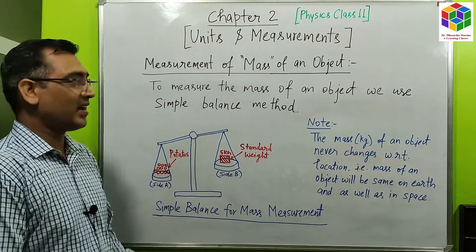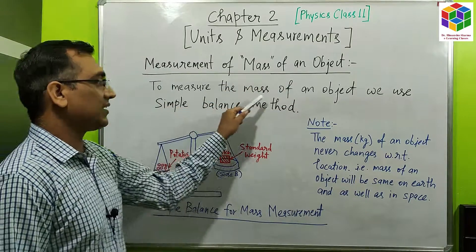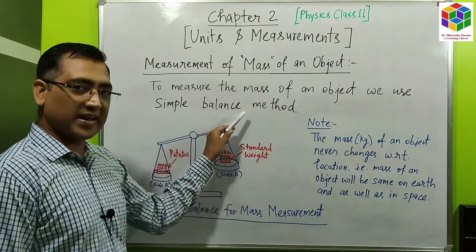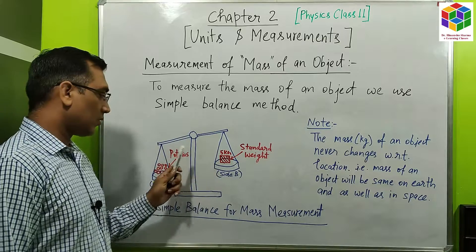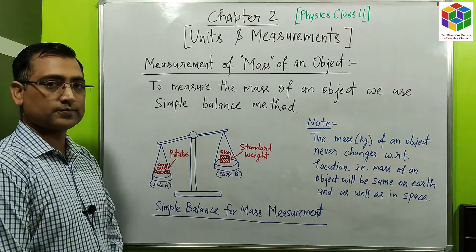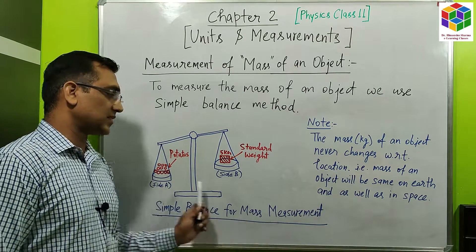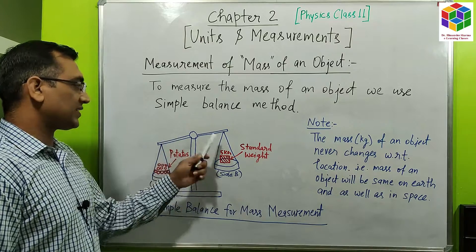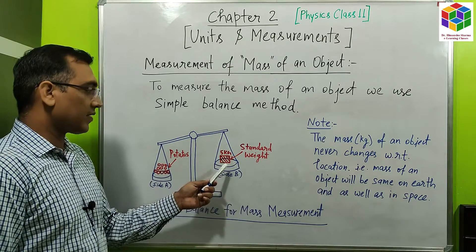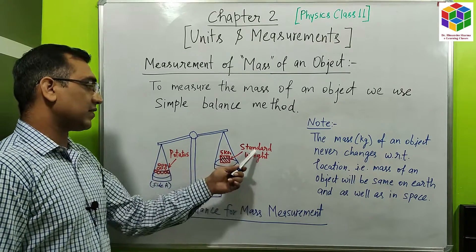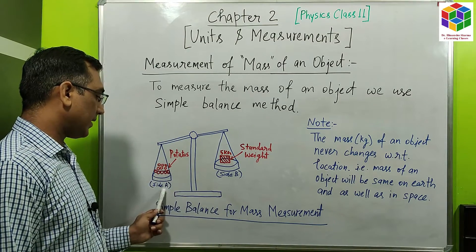Now we will see how to measure the mass of an object. To measure the mass of an object, we use the simple balance method. Here, a simple balance is shown for mass measurement. In this simple balance method, the mass of a potato is measured, which should be equal to 5 kg. The standard weight is put on one side, and the potatoes are kept on side A.